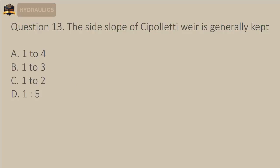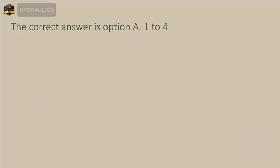Question 13: The side slope of a Cipolletti weir is generally kept — A) 1 to 4, B) 1 to 3, C) 1 to 2, D) 1 to 5. The correct answer is option A: 1 to 4.